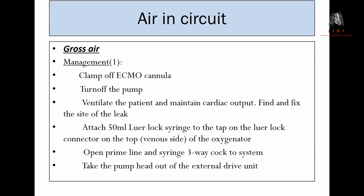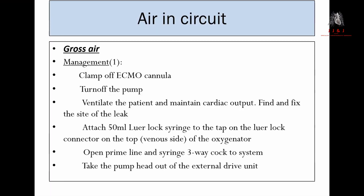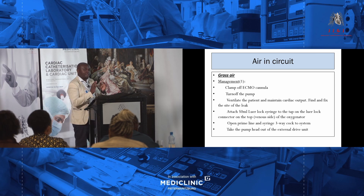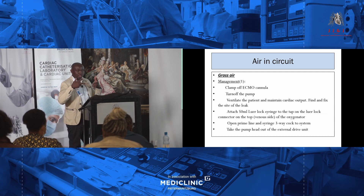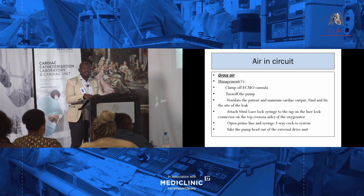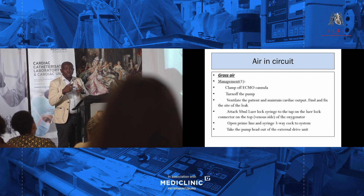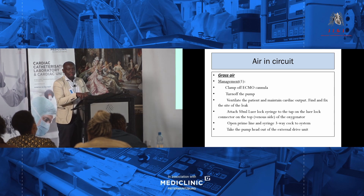On the gross air management system — that's the airlock — when do you call and who do you call? If you're the nurse in charge, the first person to call is your coordinator, who calls the team around you. You clamp off the pump on the cannula side. Depending on whether you're doing VV or VA — VV tends to be more forgiving, but on the VA side, we literally have to come off the pump immediately. You need the surgeon and intensivist next to you. Make sure the patient does not aspirate more air while you clamp.